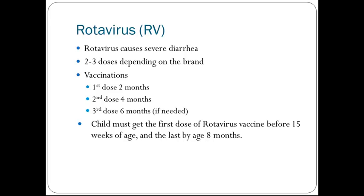Rotavirus causes severe diarrhea. There are two to three doses depending on the brand. This is the only vaccination given orally. The first dose is at 2 months, the second at 4 months, and the third dose is at 6 months if needed. Children must get the first dose of rotavirus vaccine before 15 weeks of age and the last dose by the age of 8 months in order to be effective.